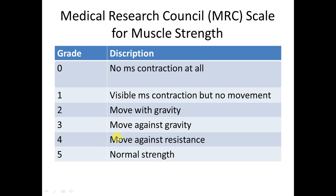Motor function must be graded using the MRC scale: grade 0 is null, grade 5 is normal strength, grade 1 is just flickering, grade 2 is movement with gravity eliminated, grade 3 is movement against gravity, grade 4 is movement against resistance. Useful muscle function starts at grade 3. Grades 1 and 2 represent no useful function.